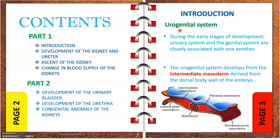In the introduction, the urogenital system during early development shows that the urinary system and the genital system are very closely related — not only developmentally but also anatomically. For example, the male urethra is used for both urine and the ejaculation pathway, so the two systems are associated both anatomically and developmentally.